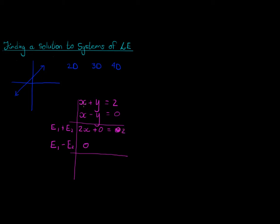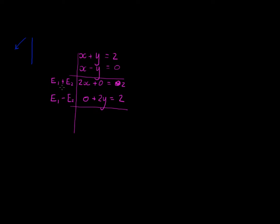And plus y minus minus y gives me plus y, so plus y plus y will give me plus 2y, which is equal to 2 minus 0, also gives me 2. Now that's one operation that I'm allowed to do.